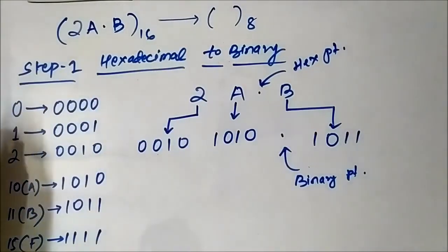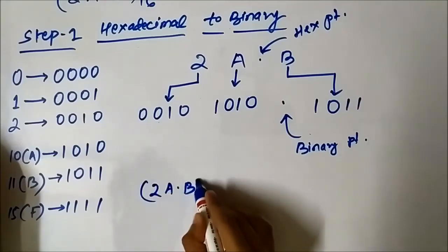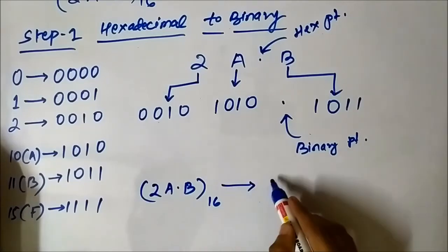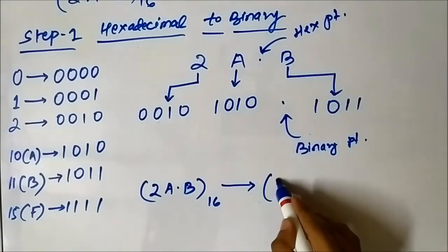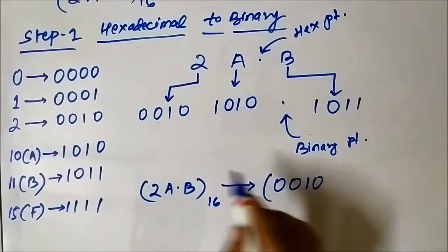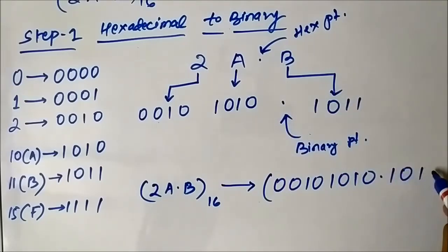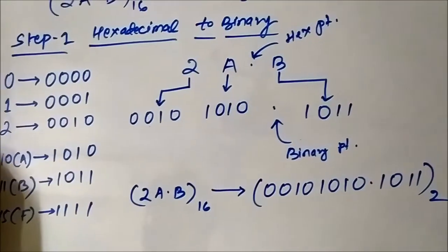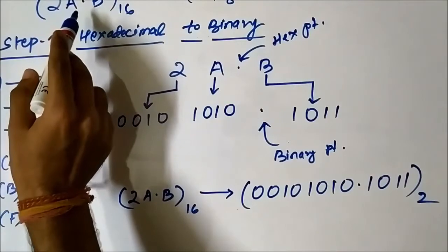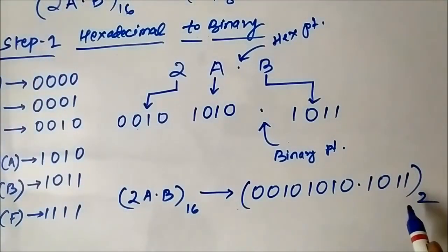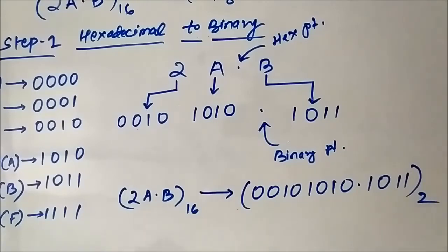So the hexadecimal number 2A.B in binary representation is obtained by combining these 4-bit groupings. The hexadecimal point coincides with the binary point, giving us 00101010.1011. This is the binary representation. We have accomplished the first task — converting the hexadecimal number 2A.B into binary. Now we have to convert this binary number into octal form, which is the second step.